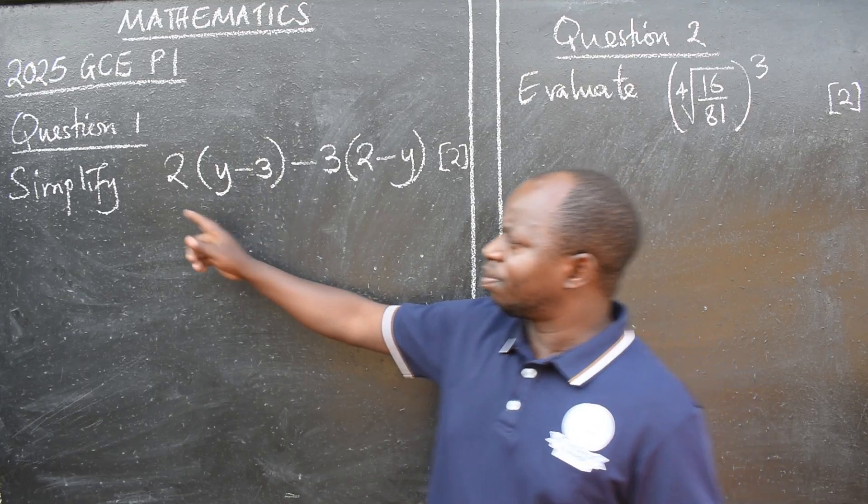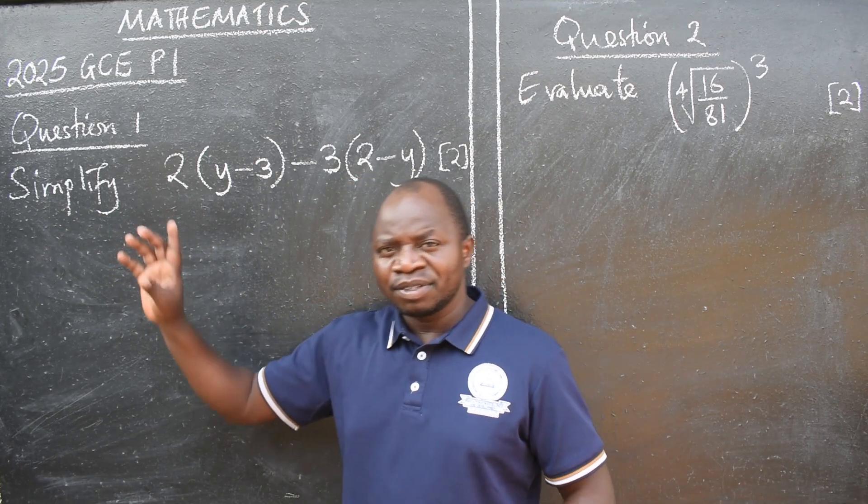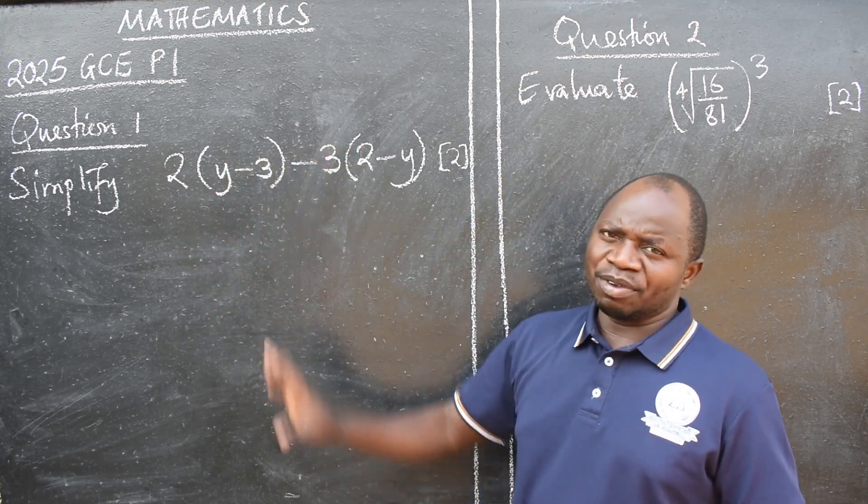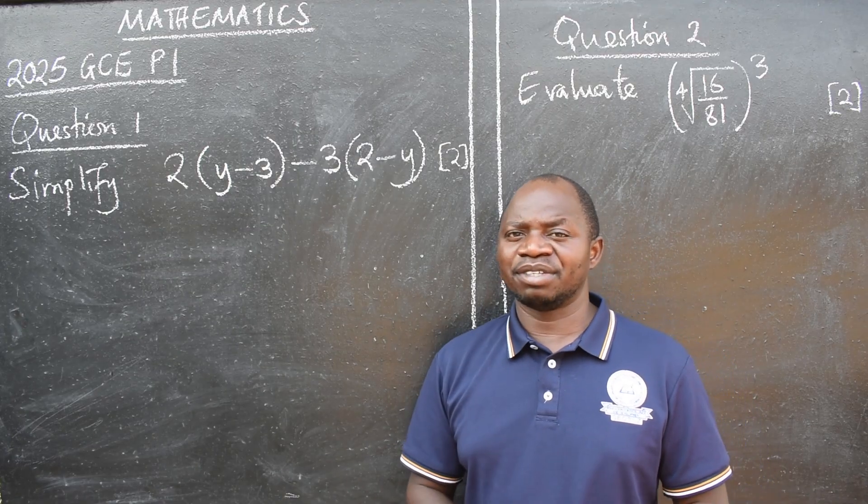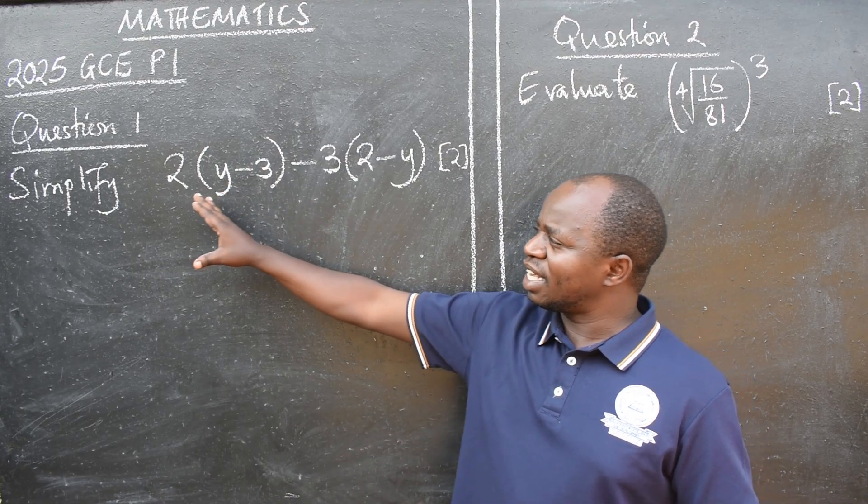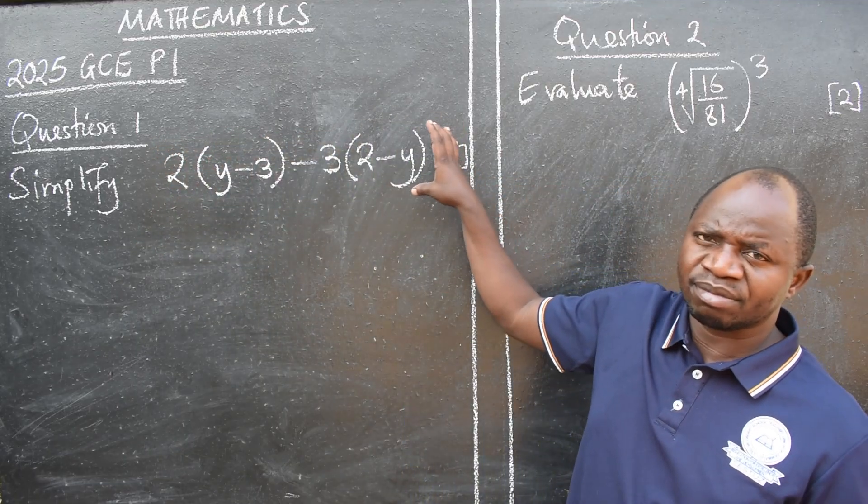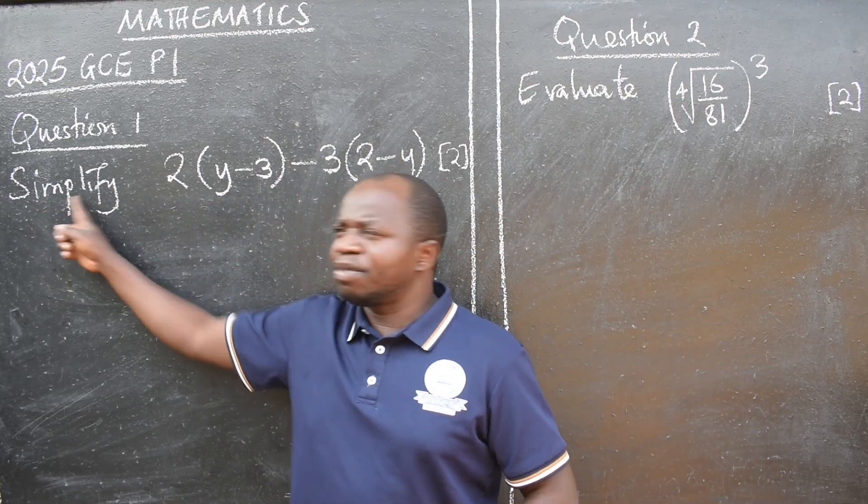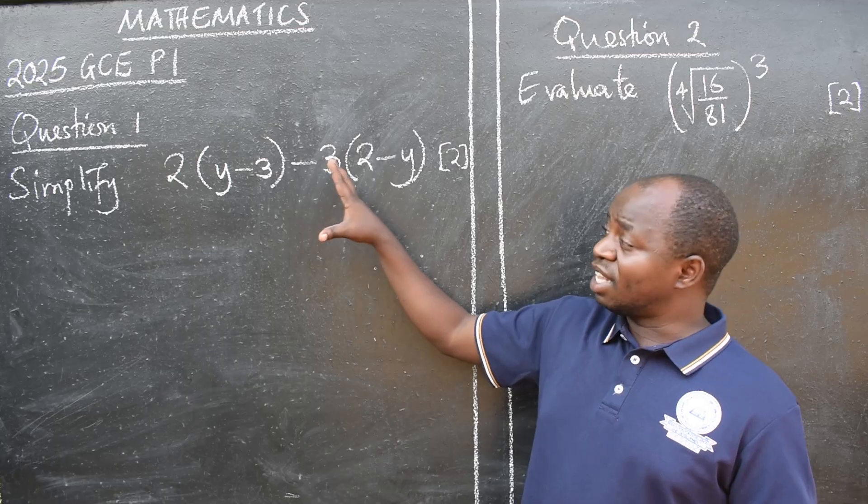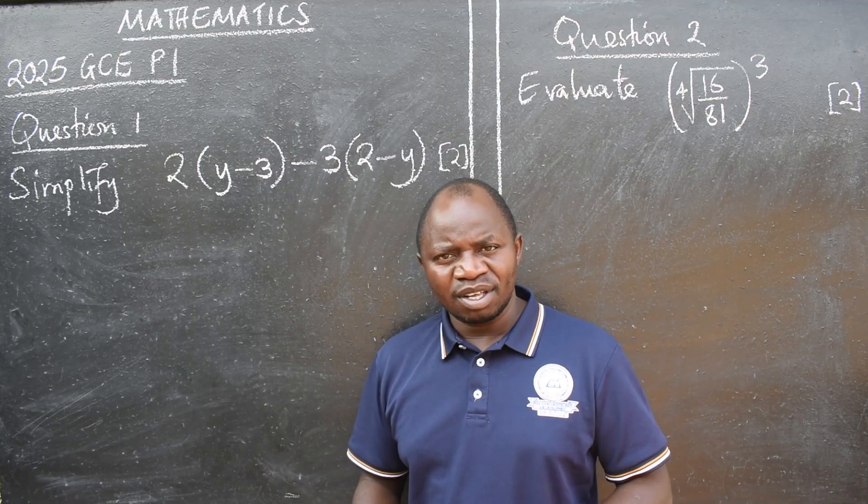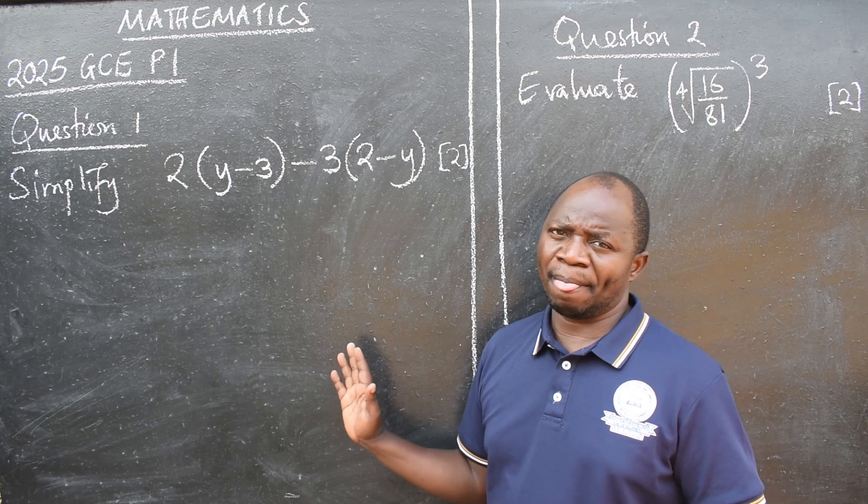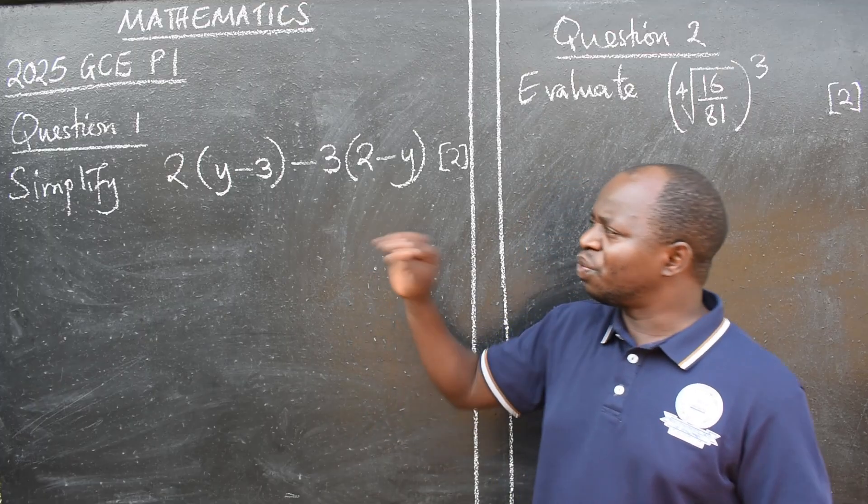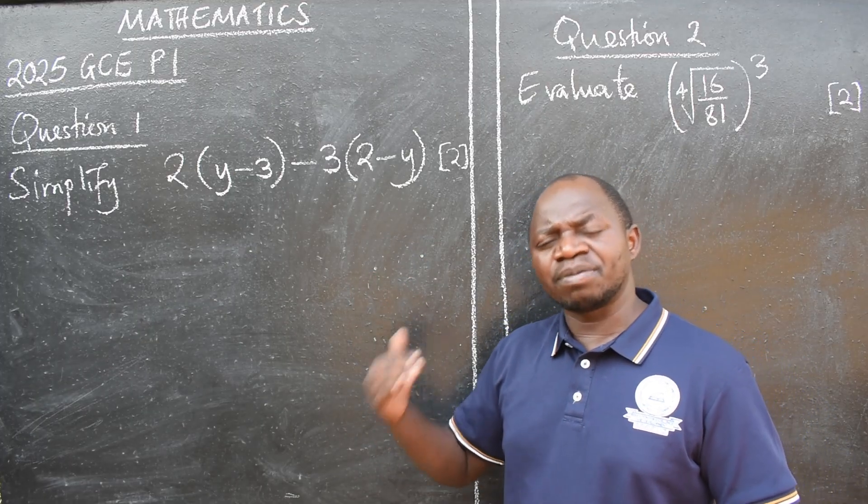We are told to simplify. Like I always say, identify the topic from which the question is coming from. That is very important. When they say simplify this expression, we are talking about algebra. And the stem of the question here is simplify, meaning shorten the number of terms, make it simple. So you are not solving here.